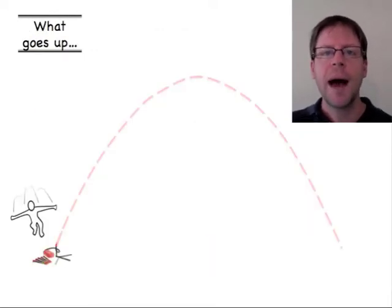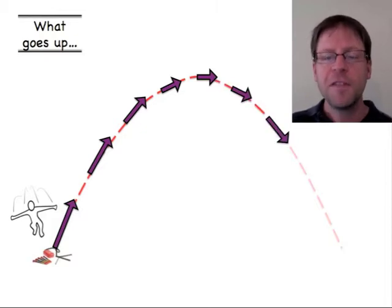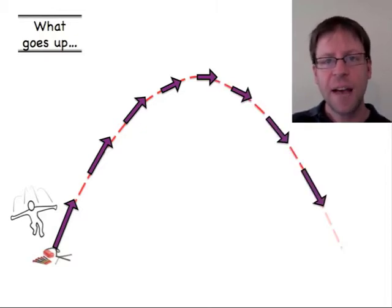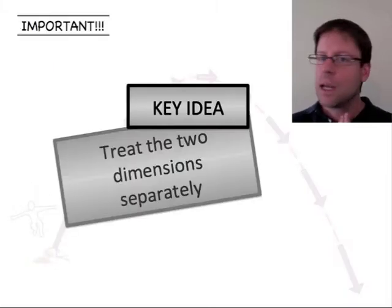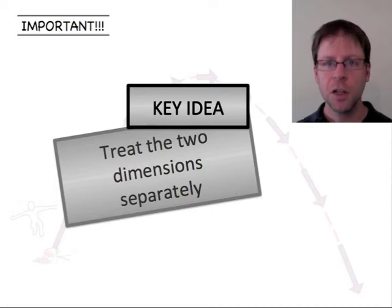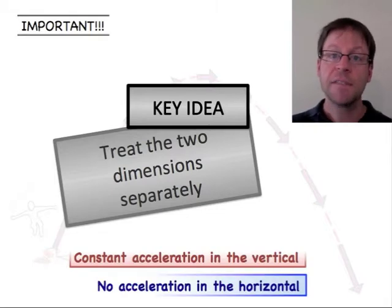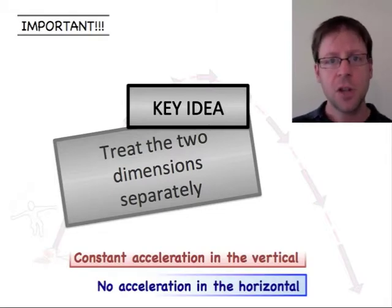We talked about how something that's launched takes this parabolic path, and all of these different purple vectors are velocity, so we have a changing magnitude and a changing direction. We said, you know what, let's split this up into two dimensions. We have a vertical, we have a horizontal. I know in the vertical I'm going to have gravity causing a constant acceleration, and in the horizontal I have zero acceleration, as long as there's no air resistance.